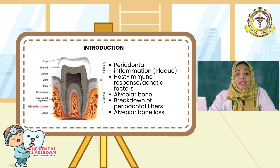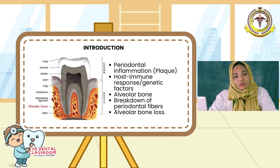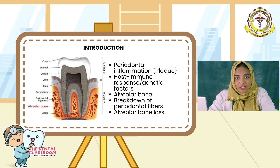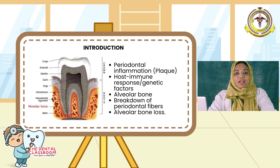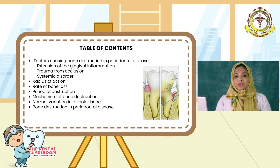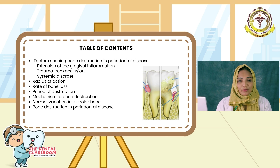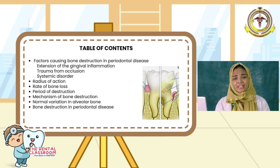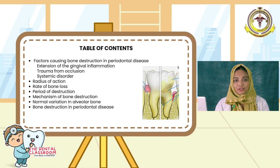Periodontal inflammation, the main offender, when left untreated and due to hyperimmune response, along with any genetic factors, will reach the alveolar bone and cause destruction of periodontal ligament fibers resulting in bone loss. Moving on to the following subheadings under which we are going to discuss — it includes three factors responsible for bone destruction.